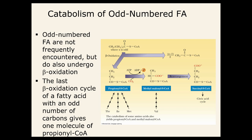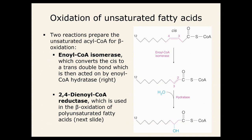For odd-number carbon fatty acids — not encountered super frequently — they also undergo beta-oxidation but end up forming one molecule of propionyl-CoA. Unsaturated fats still go through beta-oxidation, but they have two additional reactions that have to be in place to complete the process — a slightly modified beta-oxidation pathway.